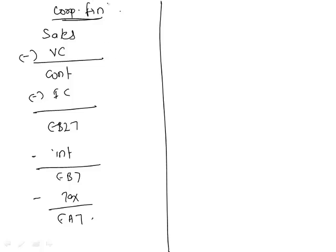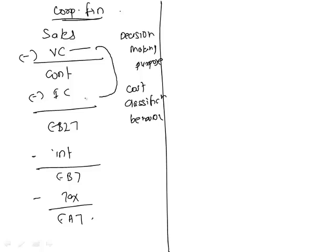This financial statement or this type of statement is used for decision making purpose. And why? Because we have classified cost based on the behavior. We have classified cost here into variable costs and fixed costs. We are trying to understand that when I manufacture more, will my cost increase proportionately or will it remain at the same level?